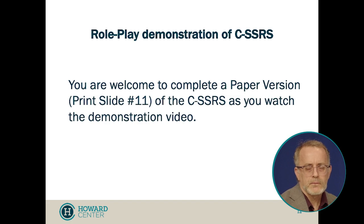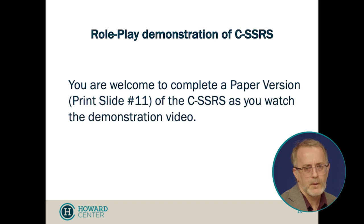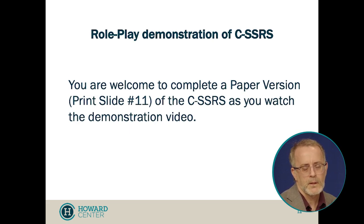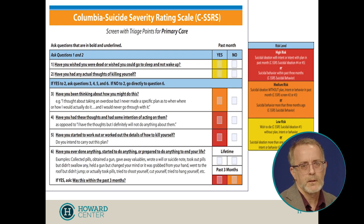We're going to go through a role play where Mark is the primary care provider and Trevor is going to be Brad, the patient. We're going to be demonstrating the use of the Columbia Suicide Severity Rating Scale, and after that the safety planning intervention, and then counseling on access to lethal means. For the section addressing the Columbia screening, please print out page 11 of your slides so that while we do the role play, you can be scoring the Columbia and having that practice.